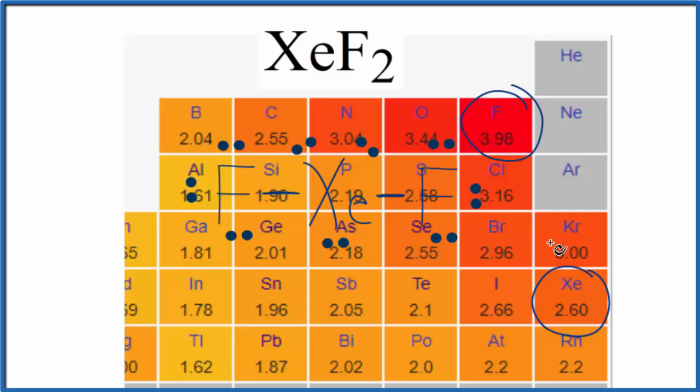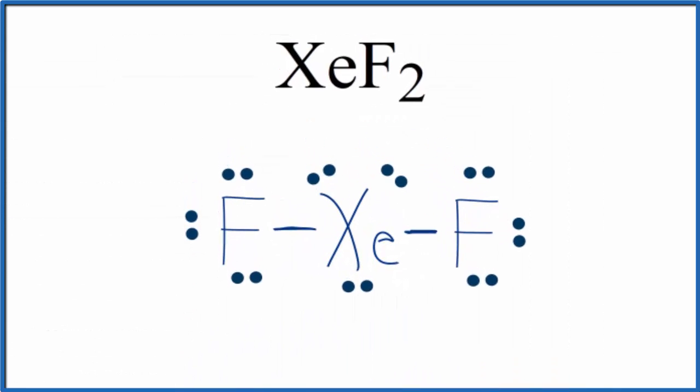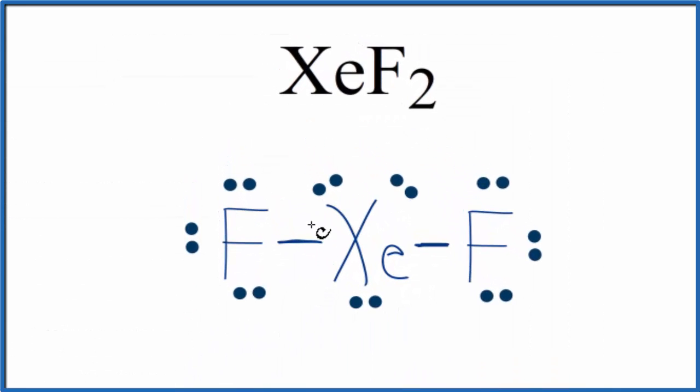So the bond between the fluorine and the xenon is going to be polar. Back to our Lewis structure, what that means is these electrons here that are shared, the chemical bond, because fluorine is more electronegative, the electrons will spend more time around the fluorine atom. So we have a polar bond. But we really need to look at the molecular geometry to figure out if the XeF2 molecule overall is polar or nonpolar.